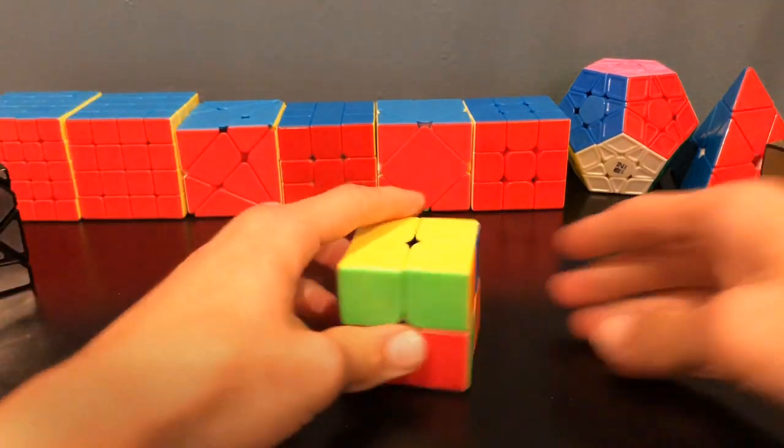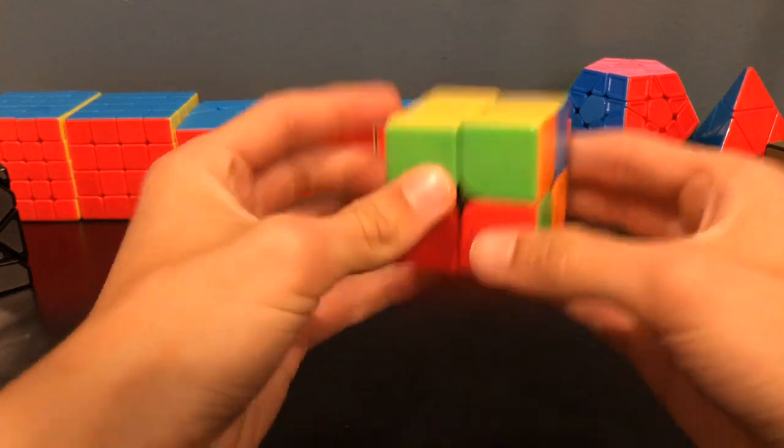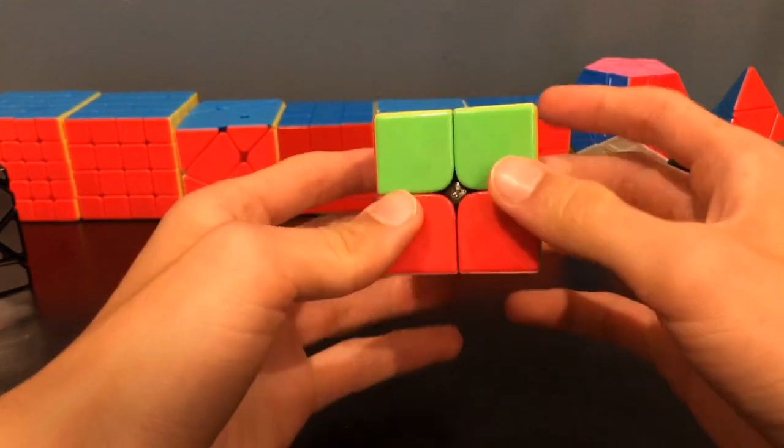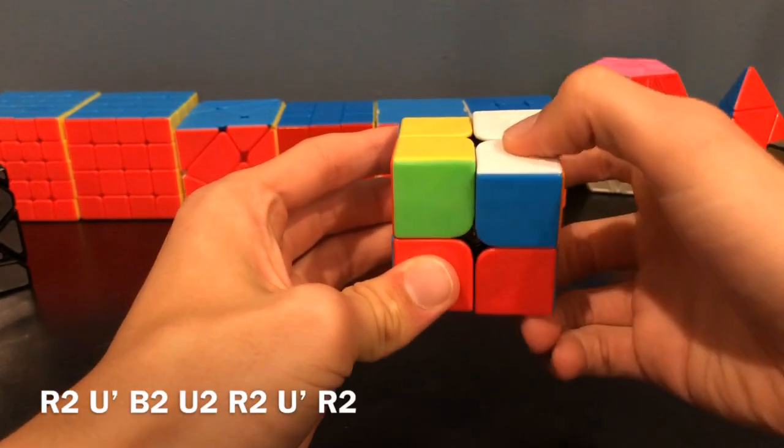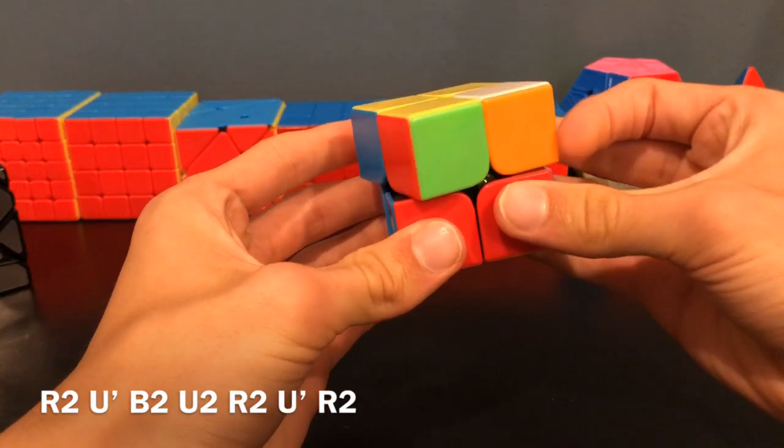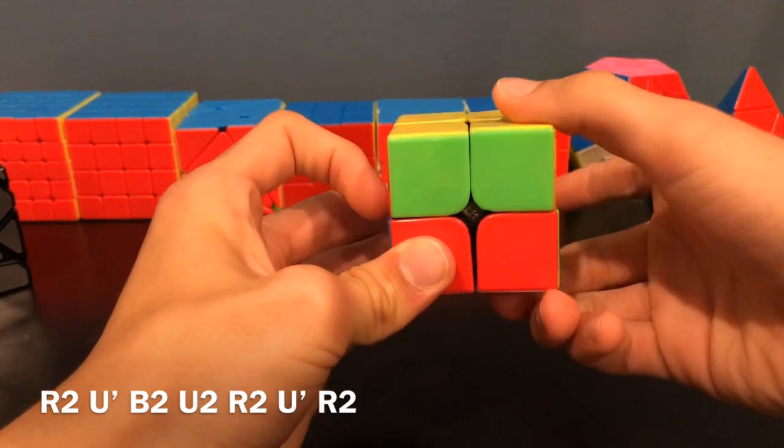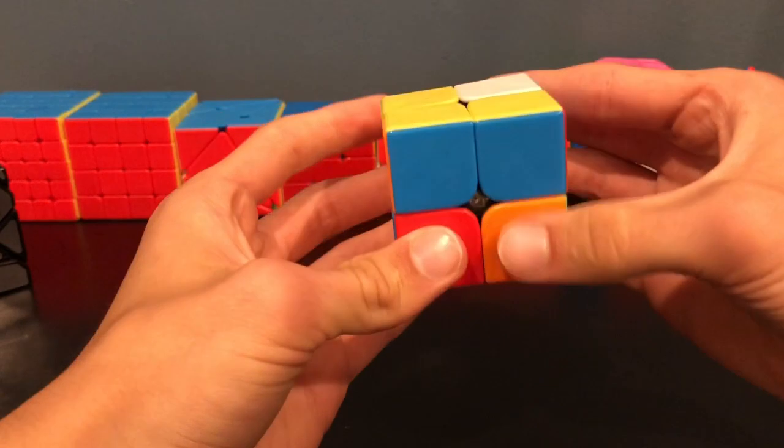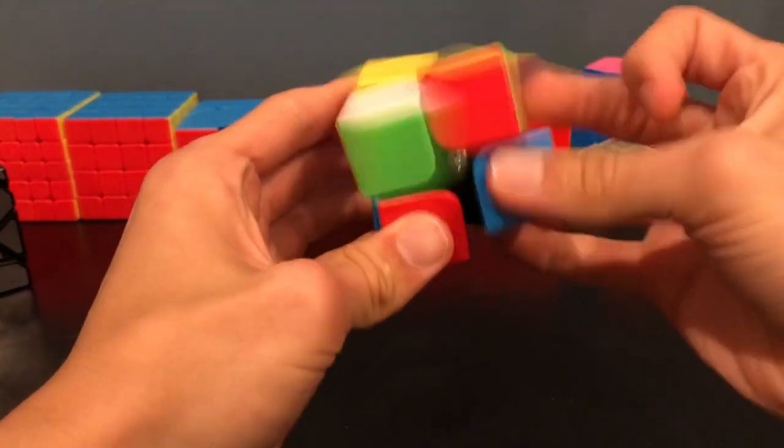This next case is when you have two pieces to swap here and two pieces to swap here. So, it's sort of like a double T perm. Although, you can do one algorithm to solve all these at once. Begin by putting both blocks in front of you and you do this algorithm. r2, u prime, b2, u2, r2, u prime, r2. There you go. So, just this back. Bring that in. There you go. That's that algorithm.